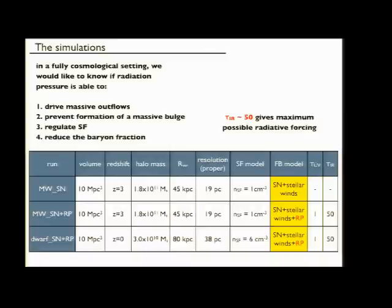The biggest difference is highlighted here. In the two Milky Way models we're comparing a model with stellar supernova feedback and stellar winds versus a model with supernova feedback, stellar winds, and radiation pressure. In all of the models we're using the highest possible radiative forcing that other people find, so that's a factor of 50 to try to bracket the effect.